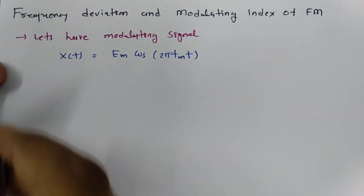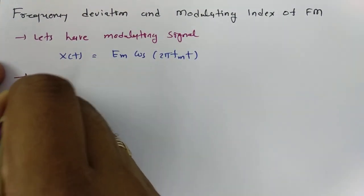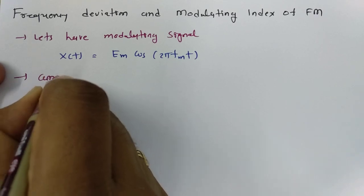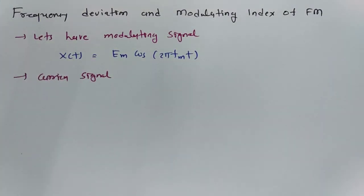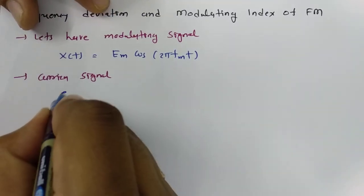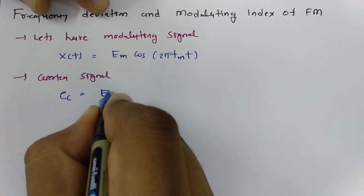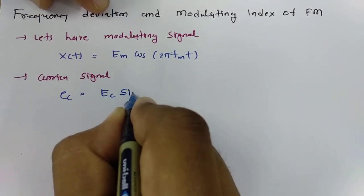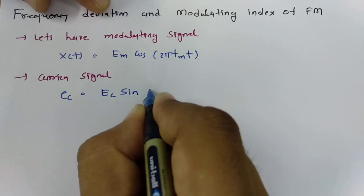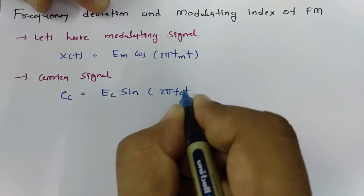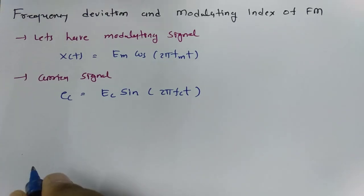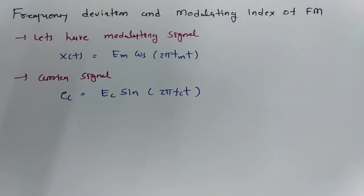Now let us consider the carrier signal. The carrier signal is Ec sin(2π fc t). So these are our modulating signal and carrier signal.